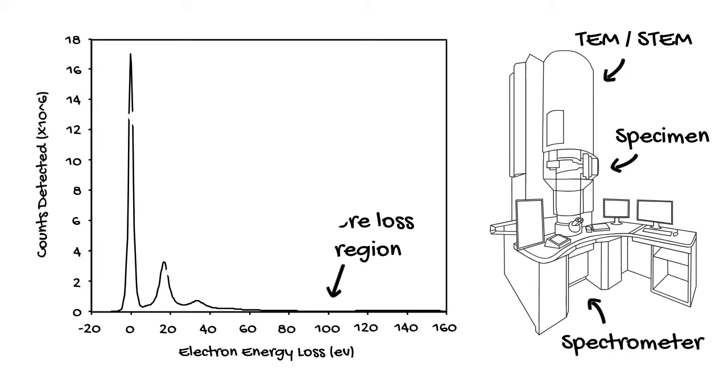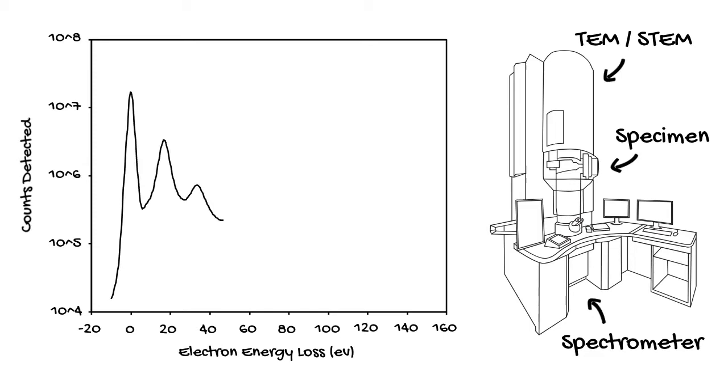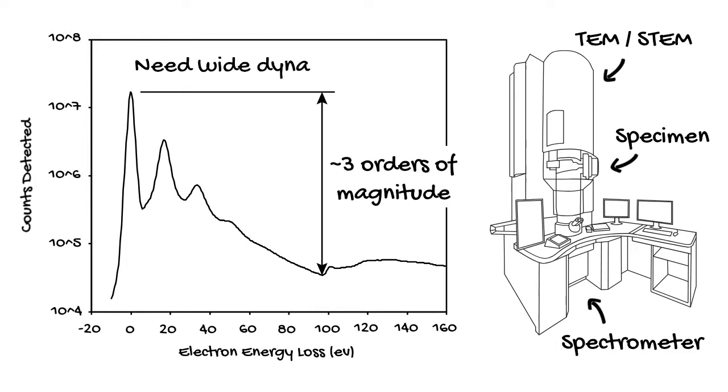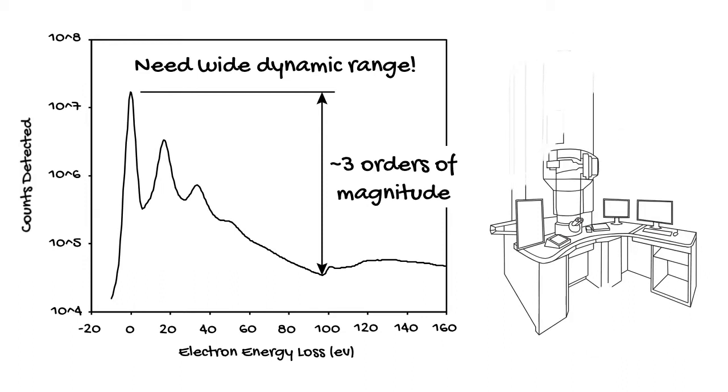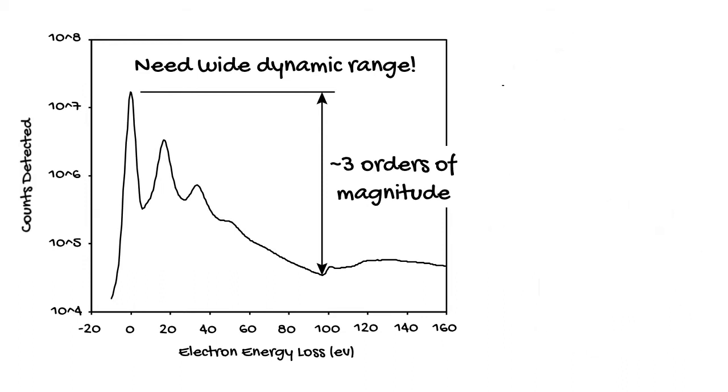Capturing this data turns out to be quite challenging, though, due to the wide range of intensities in the EELS spectrum. If we replot the EELS spectrum on a log scale, the issue becomes obvious. The intensity of the EELS spectrum often spans three orders of magnitude or more. An effective EELS detector must therefore have a wide dynamic range, so that it can capture the very intense zero loss peak, the intermediate low loss region, and the very weak core loss region.